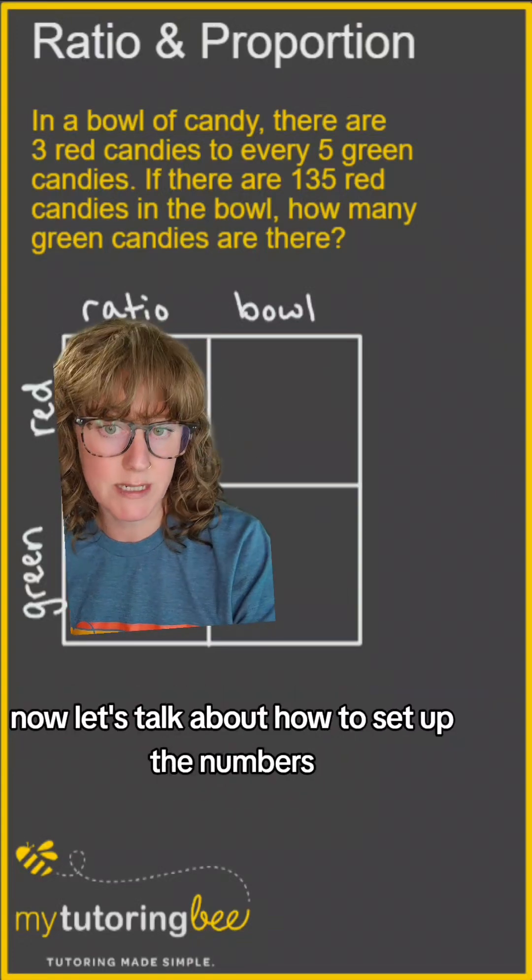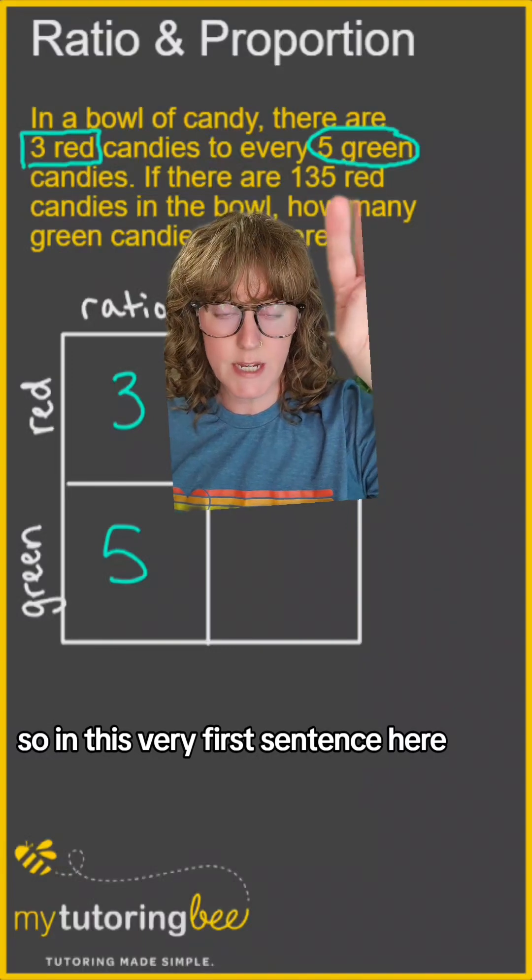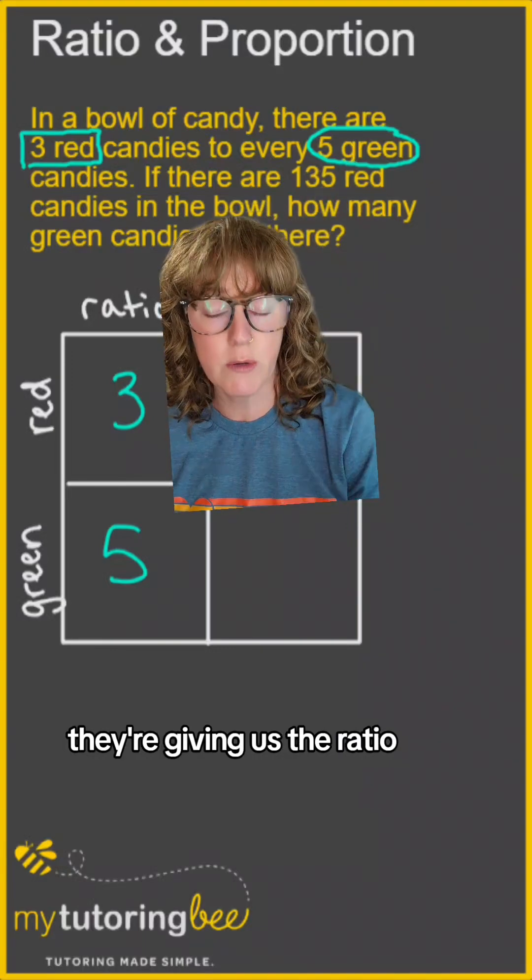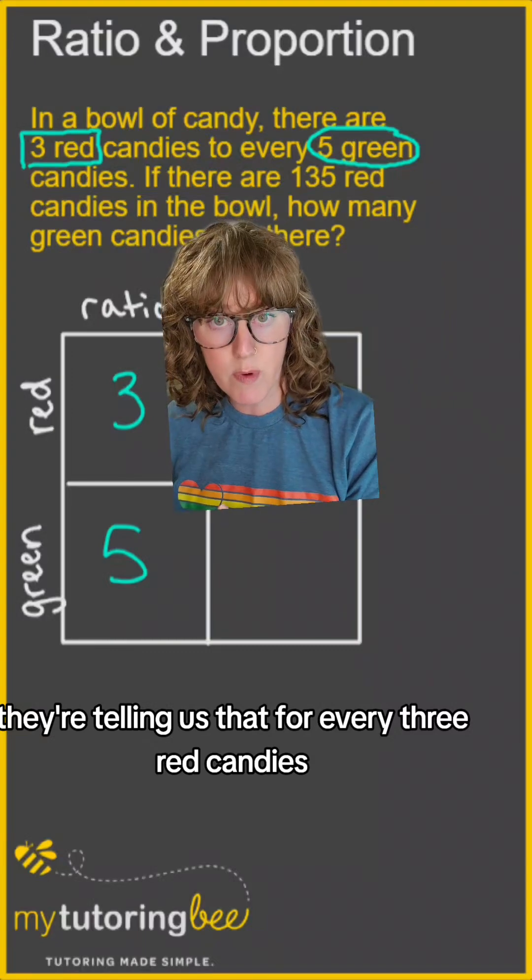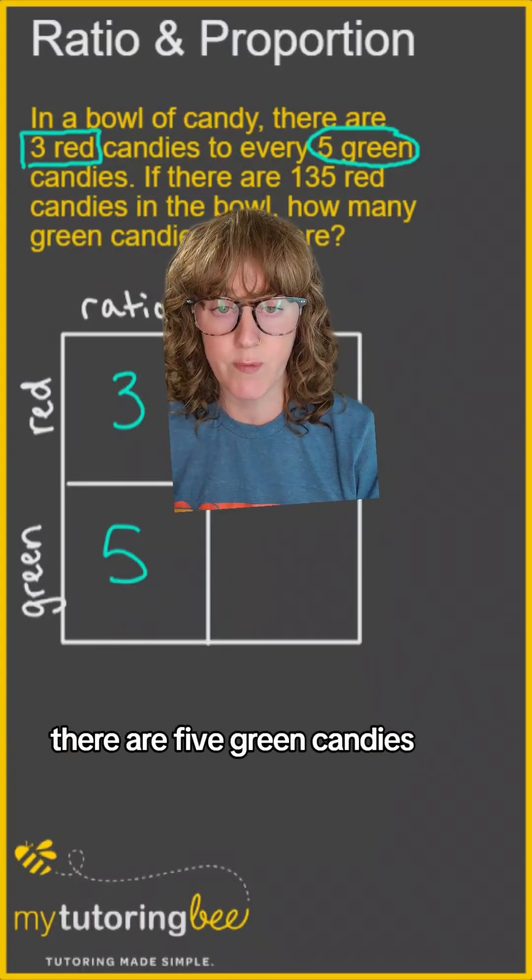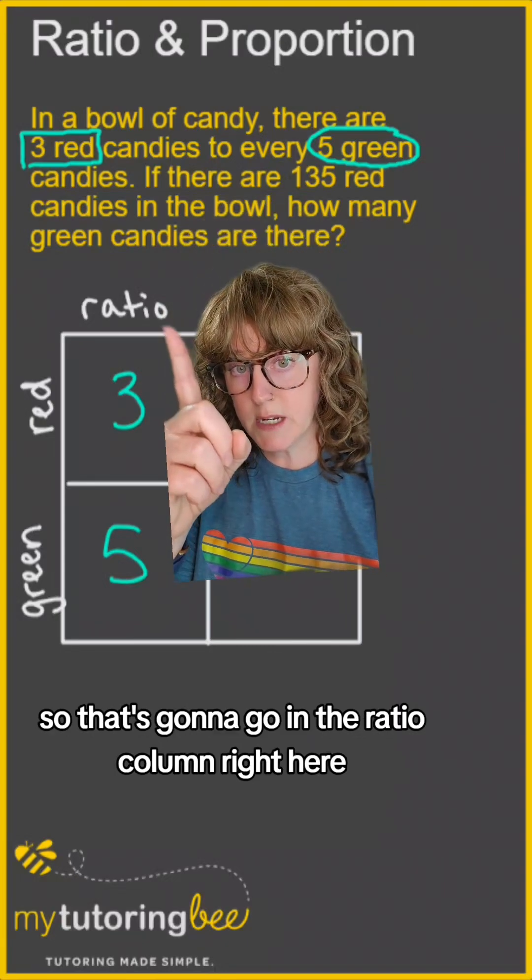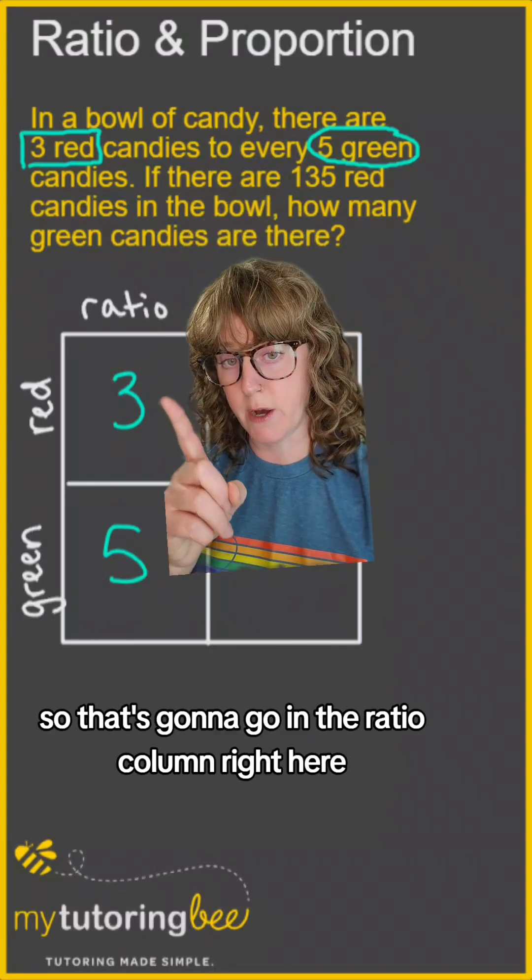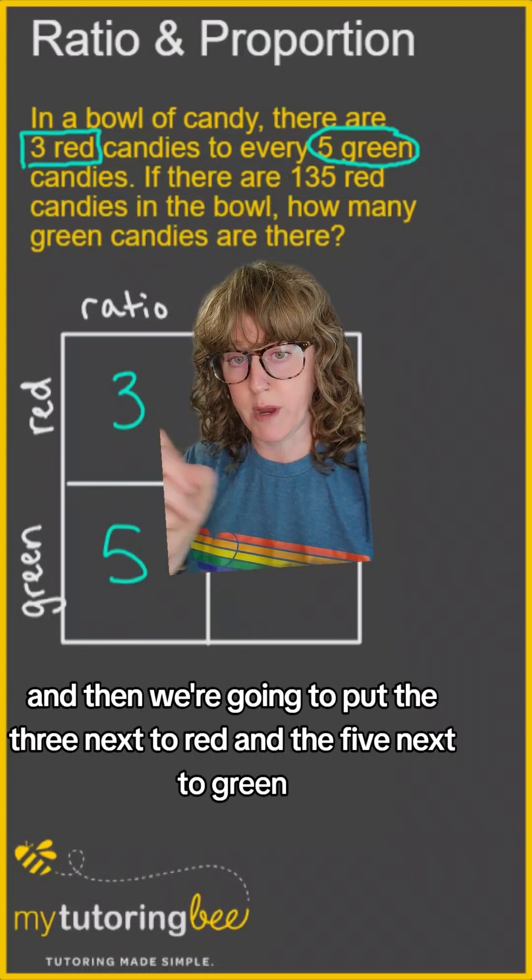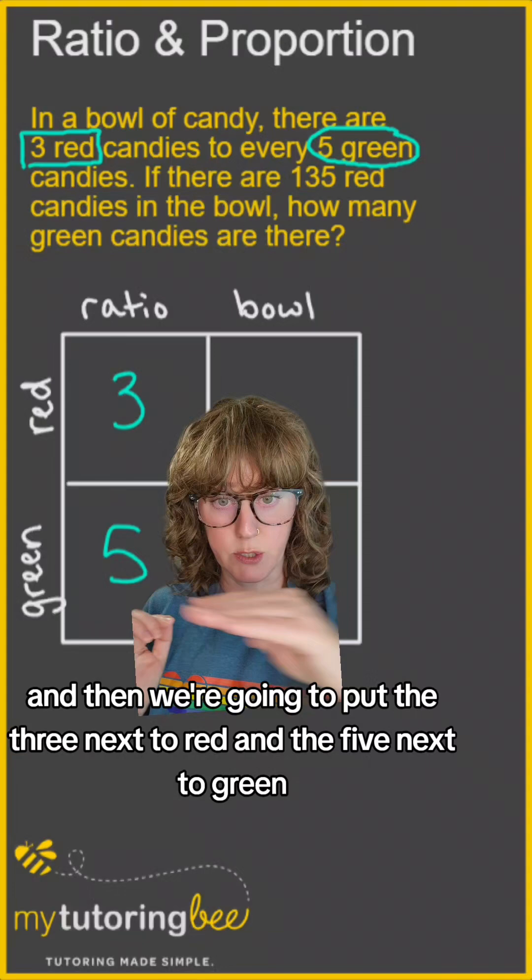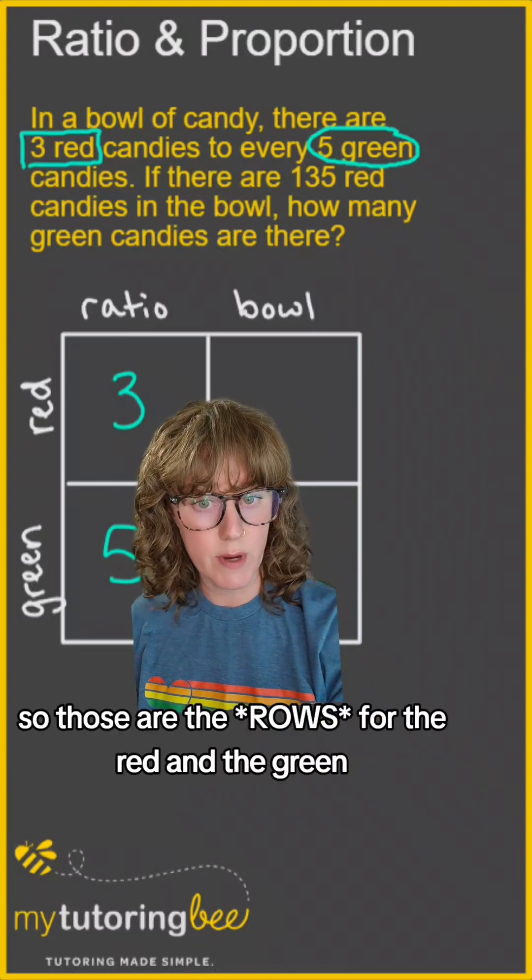Now let's talk about how to set up the numbers. In this very first sentence here, they're giving us the ratio. They're telling us that for every three red candies, there are five green candies. So that's going to go in the ratio column right here, and then we're going to put the 3 next to red and the 5 next to green.